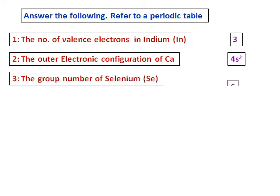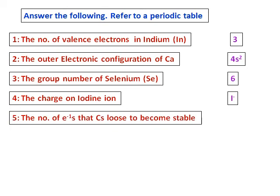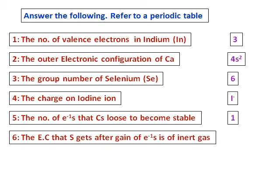Question 4: the charge on iodine ion. Iodine belongs to group 7, therefore it will gain one electron to give a charge of I⁻. The number of electrons that cesium loses to become stable: cesium belongs to group 1, and therefore it loses one electron to become stable.